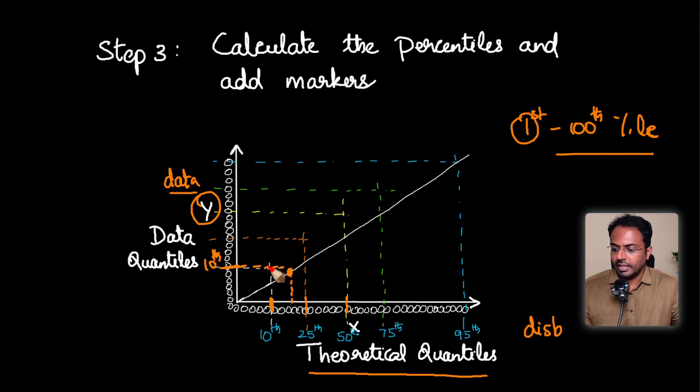But here, in this case, it is falling right over here. So essentially, if both the distributions match, then all the respective quantiles will fall exactly on the reference line. It will not deviate away from the reference line. That's what we observe whenever we are looking at a QQ plot.